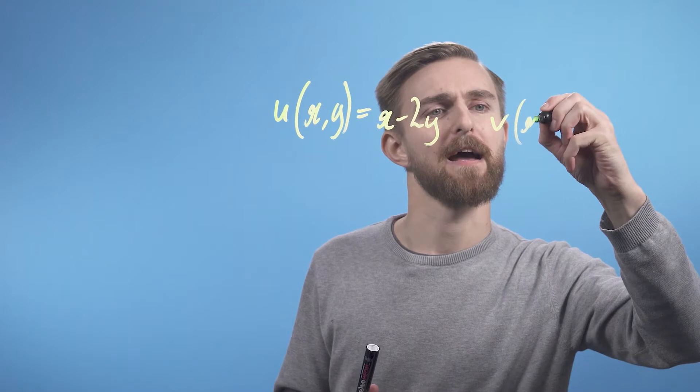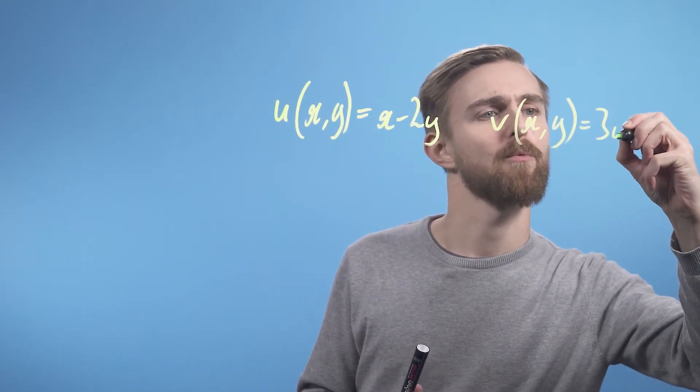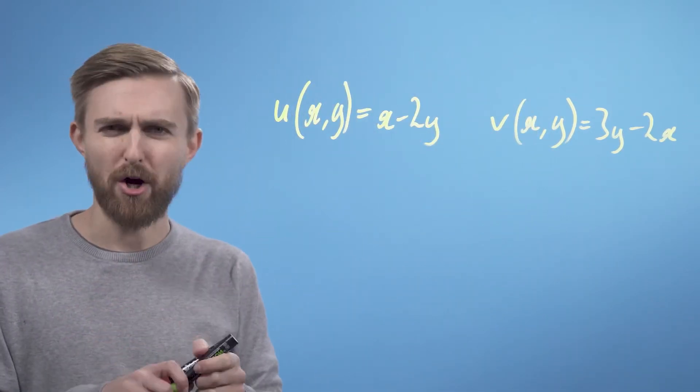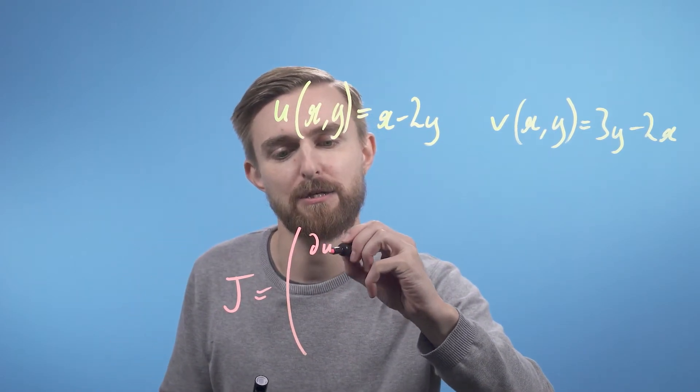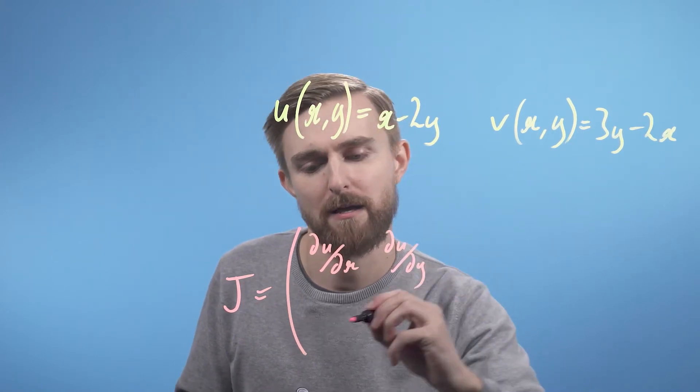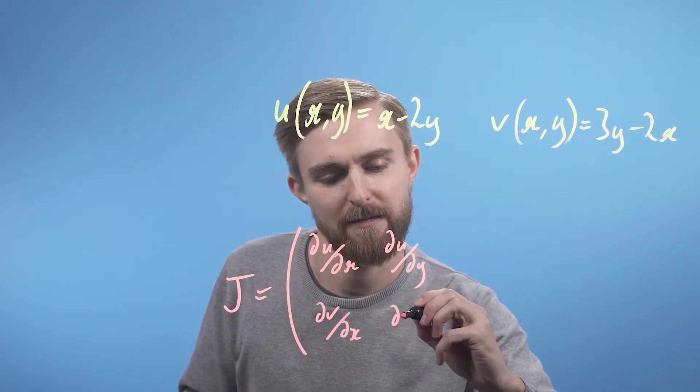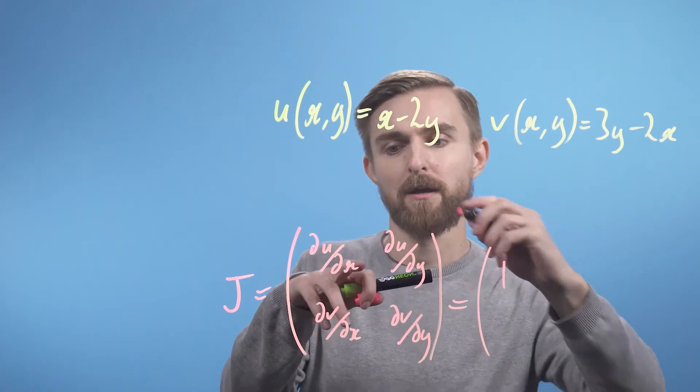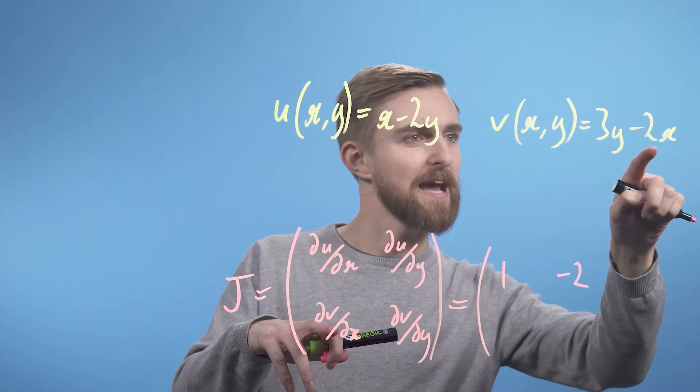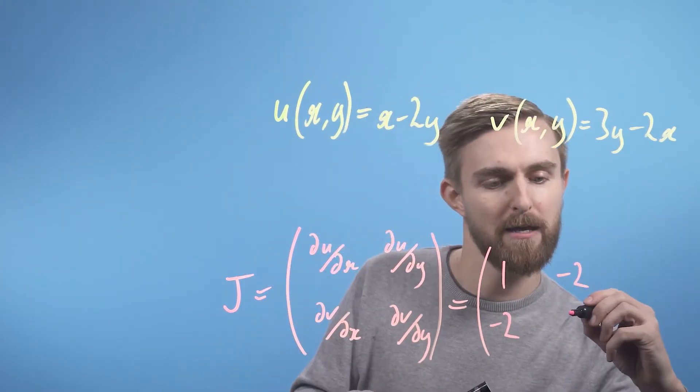So now that we have the structure and motivation for building a Jacobian matrix for vector valued functions let's apply this to our example functions and see what we get. So we have u(x,y) equals x minus 2y and v(x,y) equals 3y minus 2x. We can build the Jacobian by saying the Jacobian is going to be du/dx, du/dy, dv/dx, dv/dy. So let's work through it. du/dx is just 1, du/dy is minus 2, dv/dx is minus 2 again and dv/dy is 3.